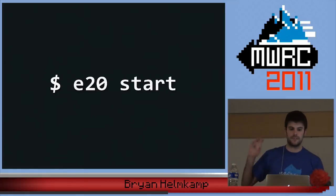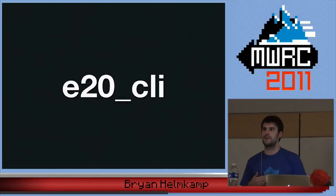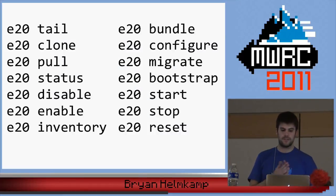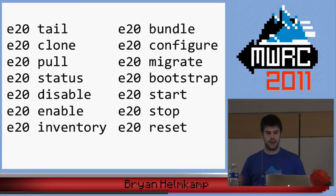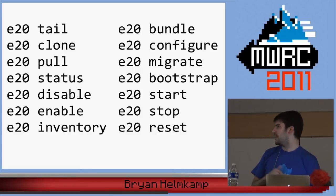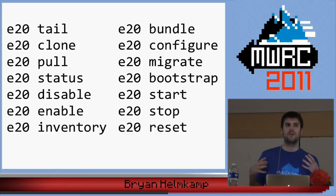All of that is encapsulated here. If it doesn't give you a working app, it's broken and you can fix it. We packaged this into E2O CLI — a private gem hosted on our private RubyGem server. E2O start is obvious. E2O stop. One of the big interesting subcommands is E2O inventory.